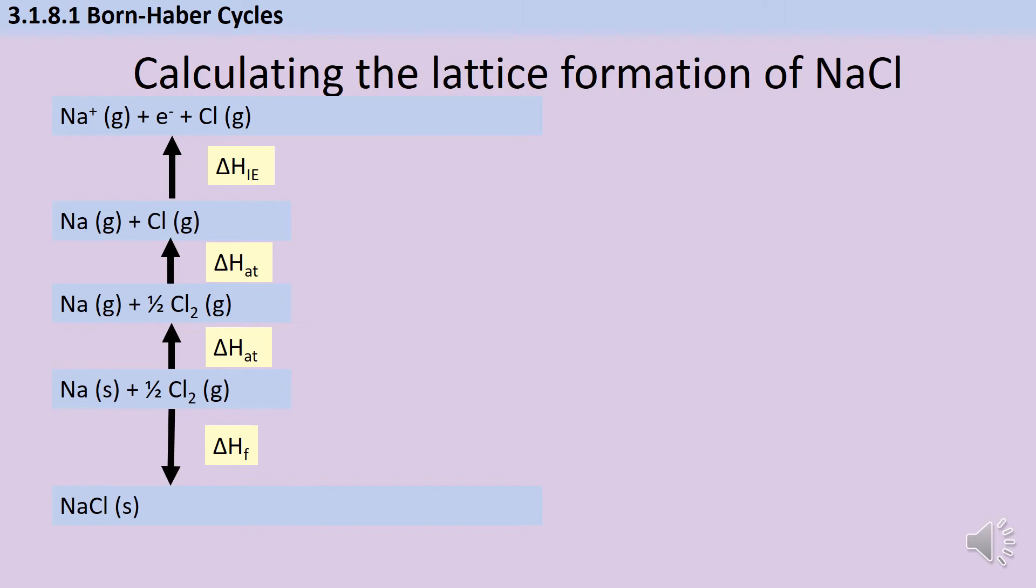Once we have a sodium ion and an electron, that electron can be given to the chlorine atom, and so we need the first electron affinity. This is an exothermic process, and so this arrow is always going to point down. Now we have a mole of gaseous sodium ions and a mole of gaseous chloride ions. So these can form together to form a mole of our solid ionic compound, and this is the enthalpy of lattice formation.